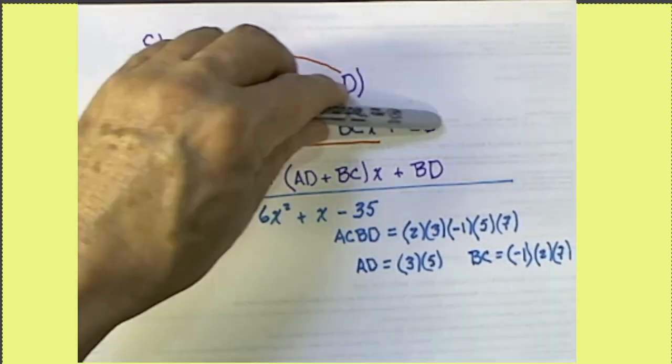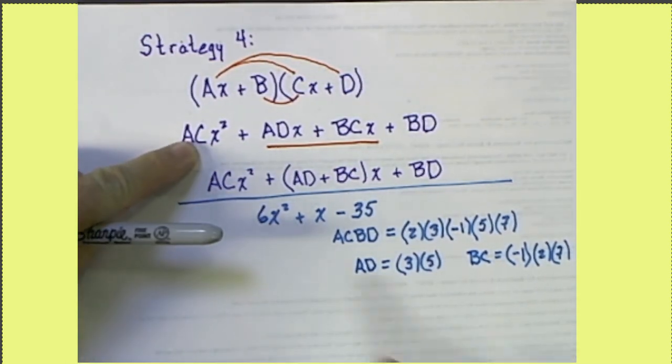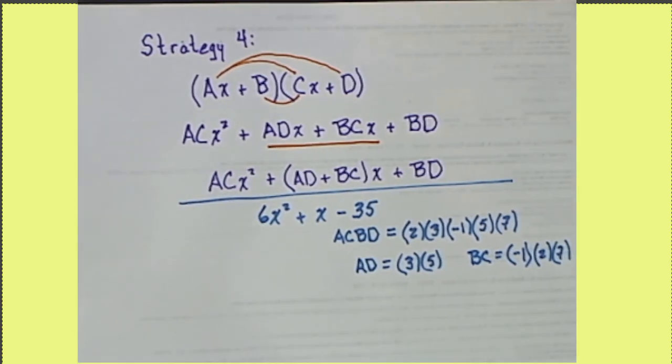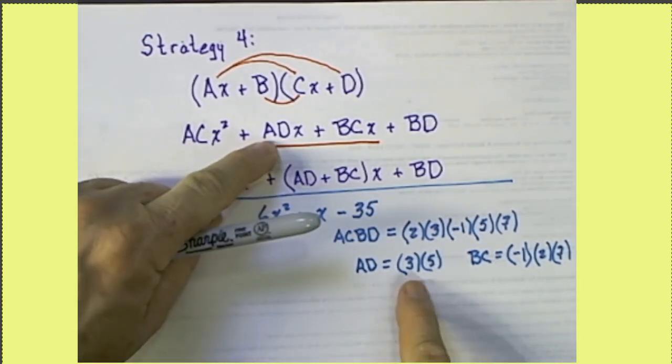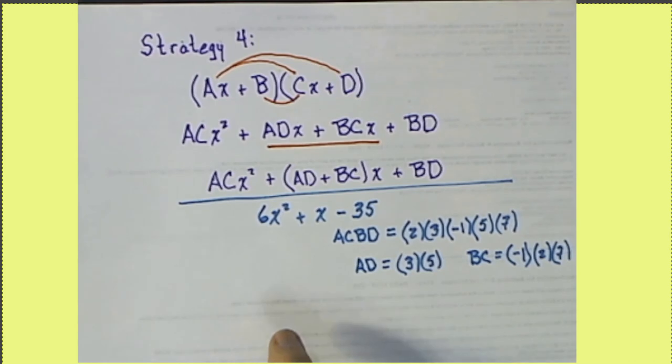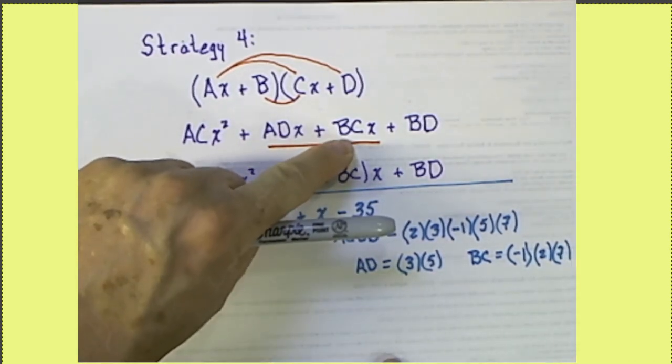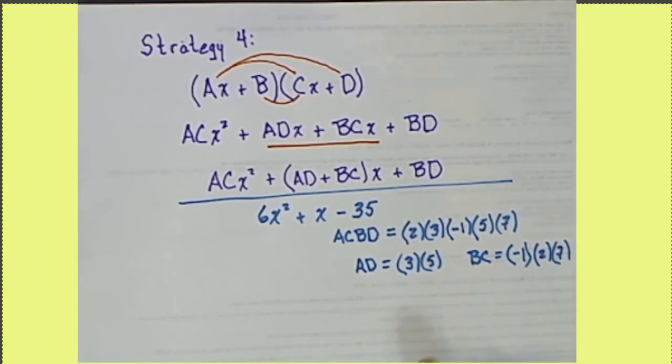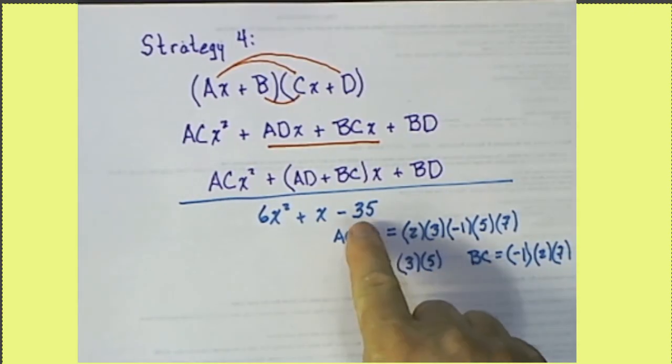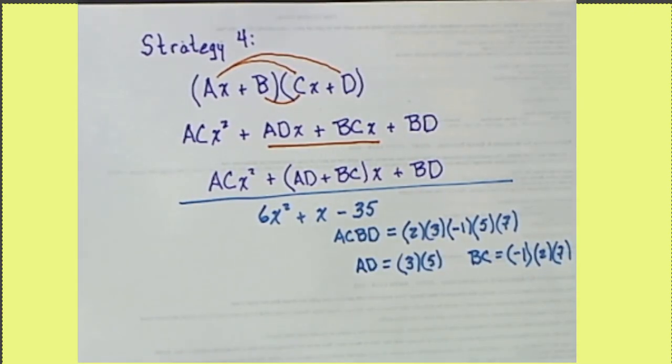Now we know all the parts to this line. We know what AC is, it's 6. We know what AD is, it's 15. We know what BC is, it's negative 14. And we know what BD is, it's negative 35.